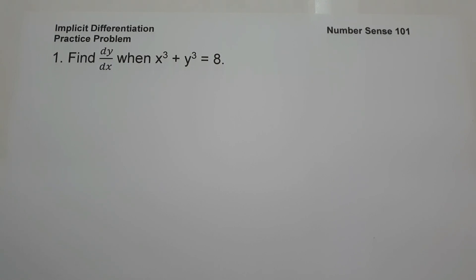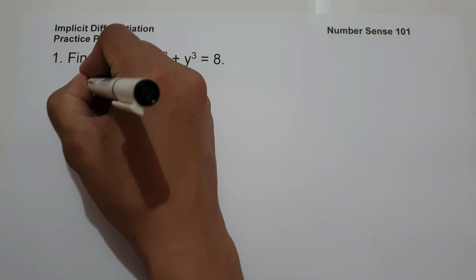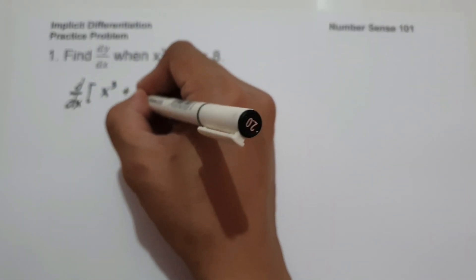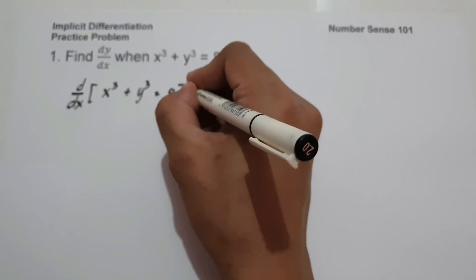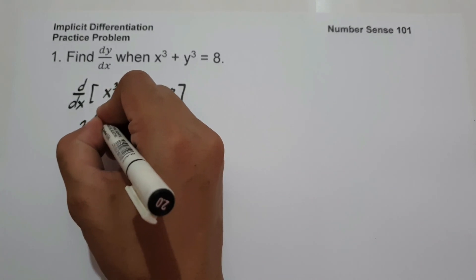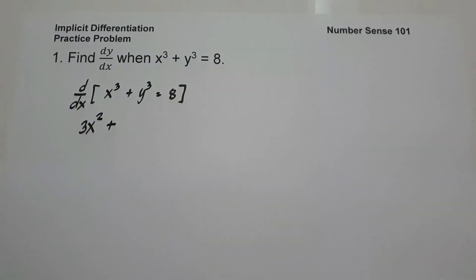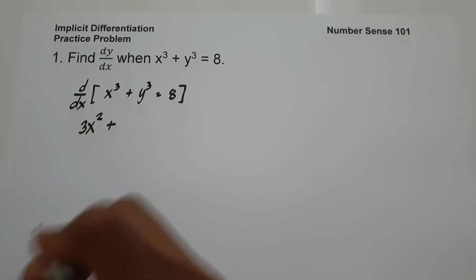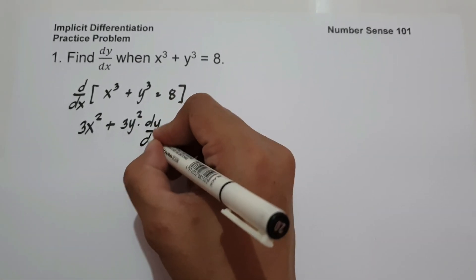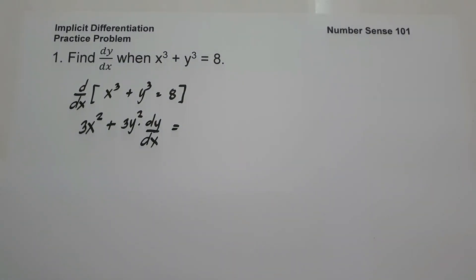So how can we find the value of dy over dx in this equation? The first step is to differentiate both sides of the equation. We are going to have d over dx of x cubed plus y cubed equals 8. The derivative of x cubed is 3x squared. And whenever we differentiate a y variable, it is always associated with dy over dx. So the derivative of y cubed is 3y squared times dy over dx. And the derivative of 8 is 0.